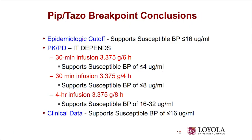For PIP-TAZO, the epidemiologic cutoff suggests 16 would be a good breakpoint, but based on pharmacokinetics, infection site, and dosing, you might support a breakpoint of 4, 8, 16, or 32. A lot of drugs have multiple dosing recommendations — cefepime can be dosed six different ways. How do you pick a single breakpoint when you don't know what dosing regimen the physician is ordering? We never know that in the lab.